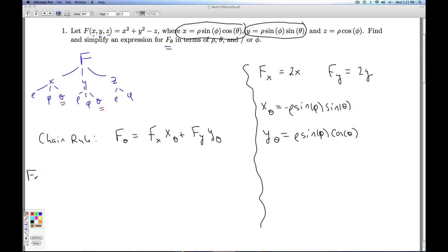All right, so I'll go back over here. Here f_theta equals 2x times negative rho sine phi sine theta, plus 2y times rho sine phi cosine theta.